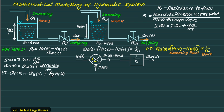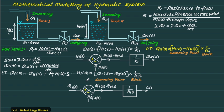Taking the Laplace transform: Q1S equals Q2S plus A1 times S times H1S, since the area A1 is constant and the Laplace transform of dH1T/dt is S·H1S. Solving for H1S, we get H1S equals (Q1S minus Q2S) multiplied by 1/(A1·S). This involves a summing point where Q1S is positive and Q2S is negative, and the output (Q1S minus Q2S) is then passed through a block of 1/(A1·S) to give H1S.